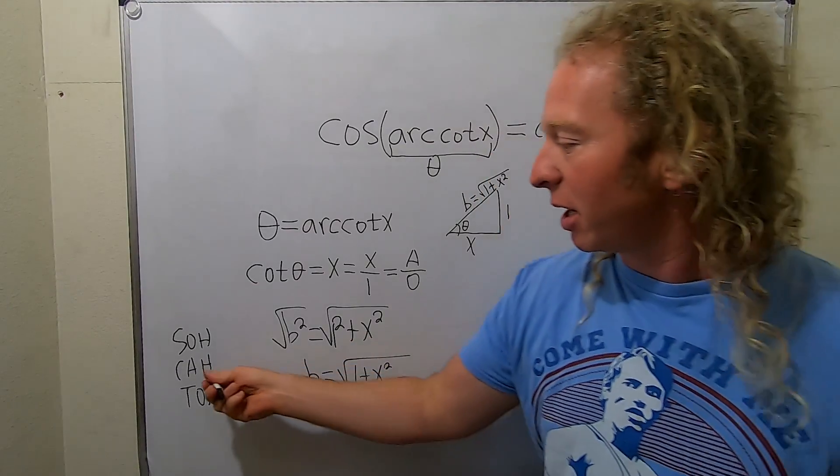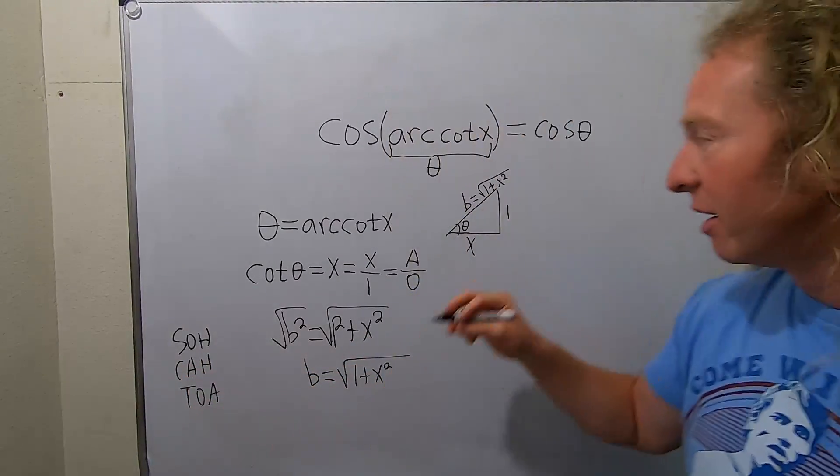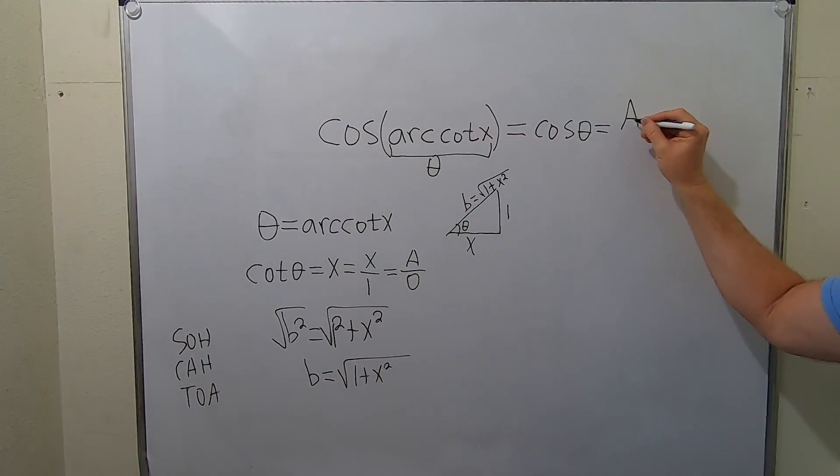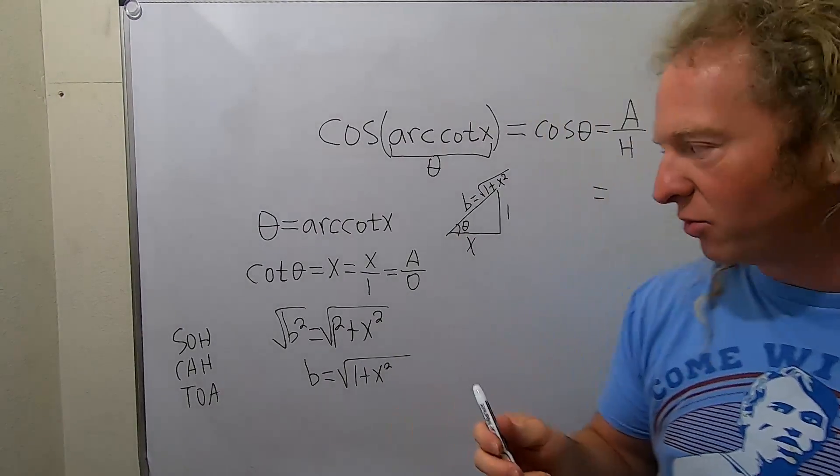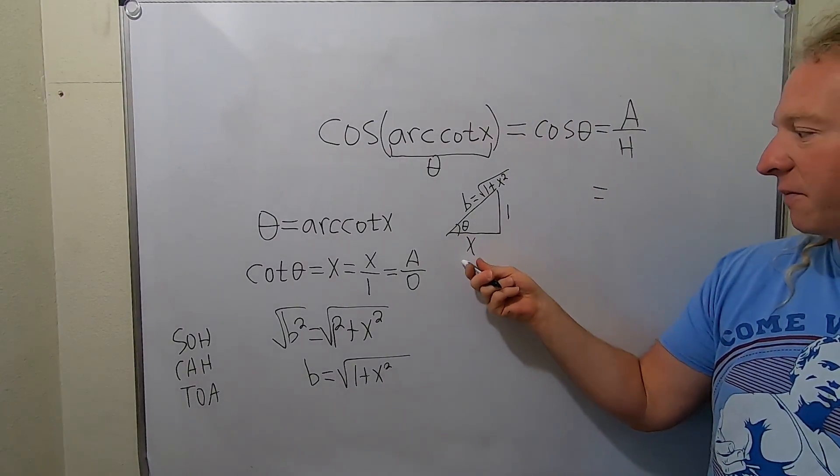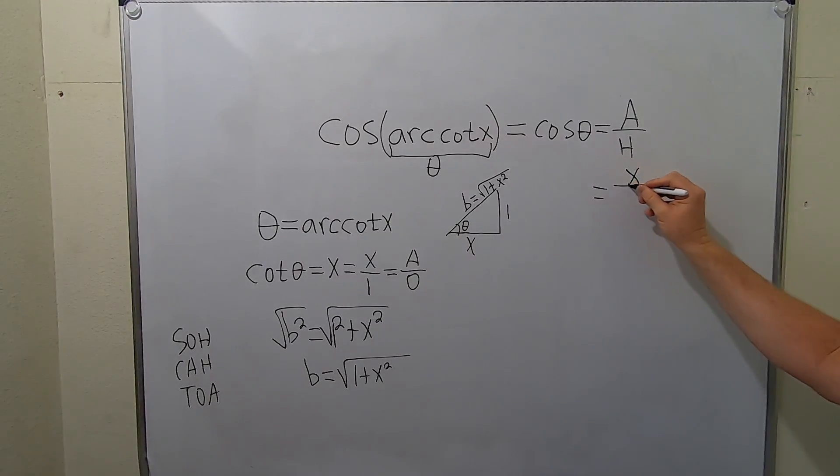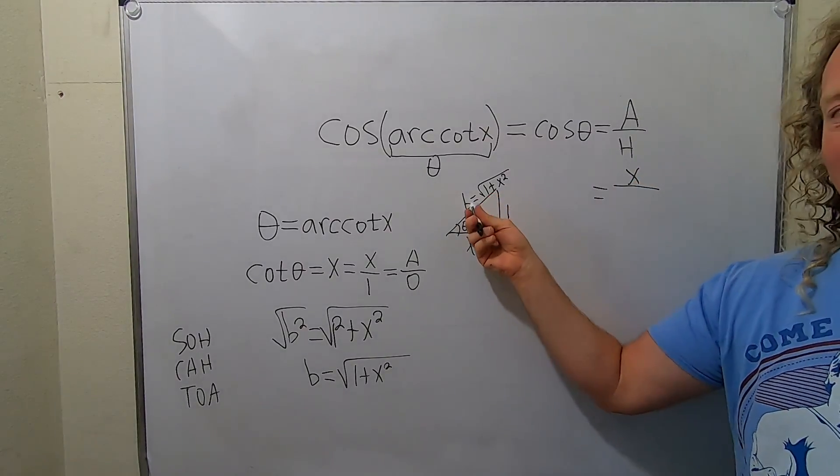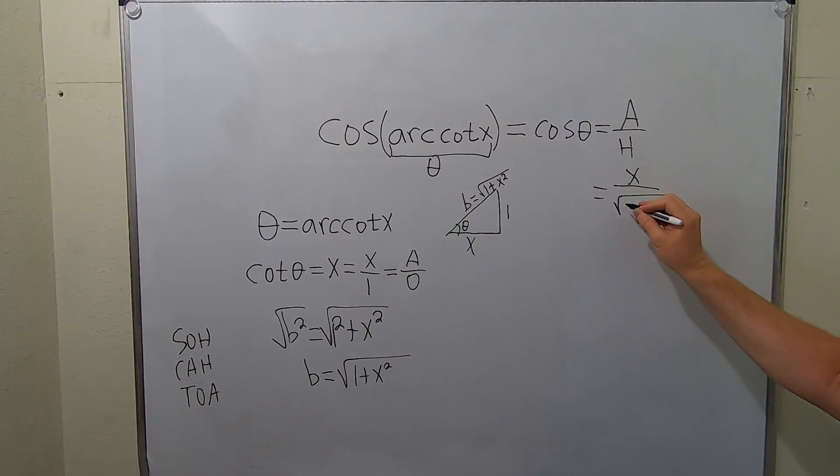And then what is cosine? It's cah. So it's a over h. I use the triangle: adjacent is this one, so x. And then hypotenuse, that's the h, is this one. There it is.